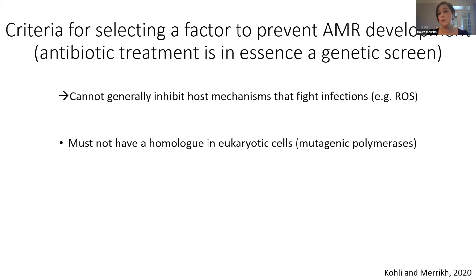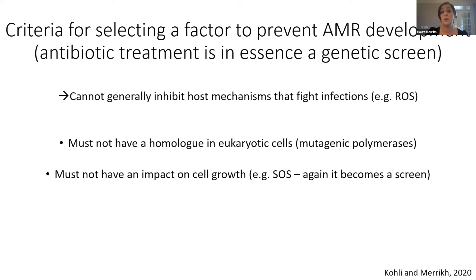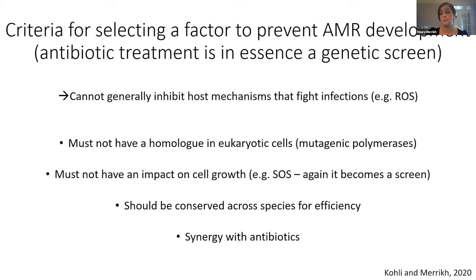What you need is a target that does not have a homologue in eukaryotic cells. For instance, mutagenic polymerases — which is what one thinks about right away — is actually a terrible target, because any inhibitor you make for those polymerases is very likely to also inhibit polymerases in the host. You also do not want a target that has an impact on cell growth, so SOS becomes a problem. When we treat infections with antibiotics, we're in essence making a genetic screen — killing everything that can die and selecting for resistant bugs. Ideally, we'd love to have an anti-evolution drug that is synergistic with existing or new antibiotics.